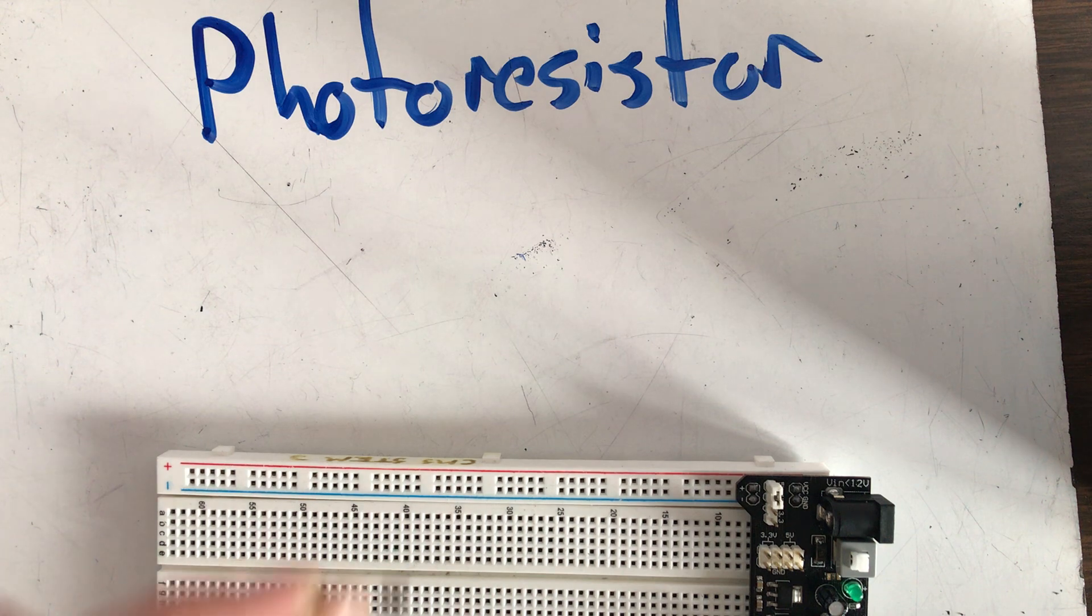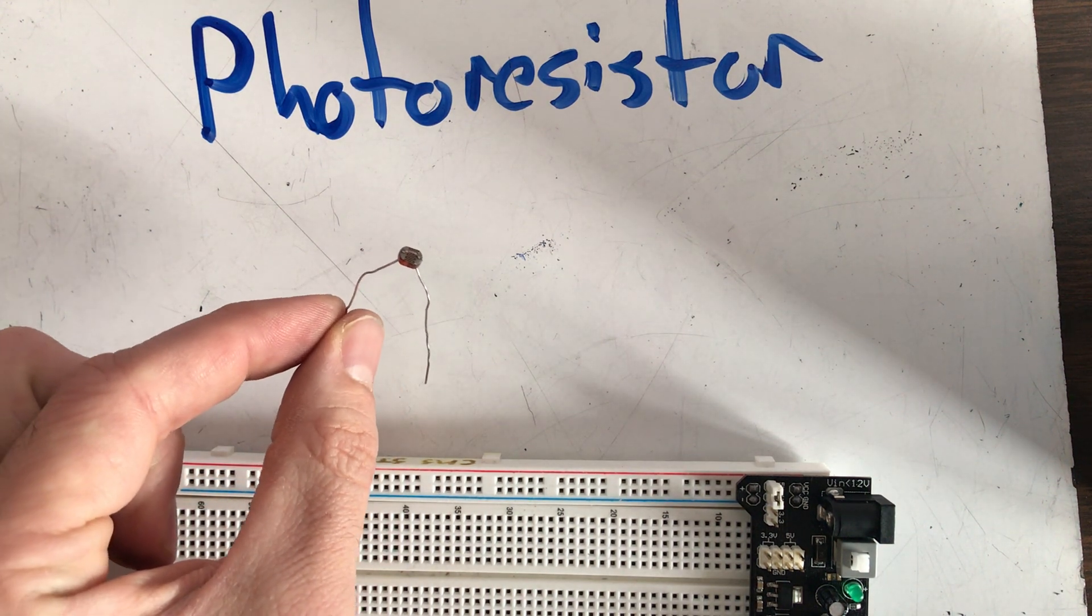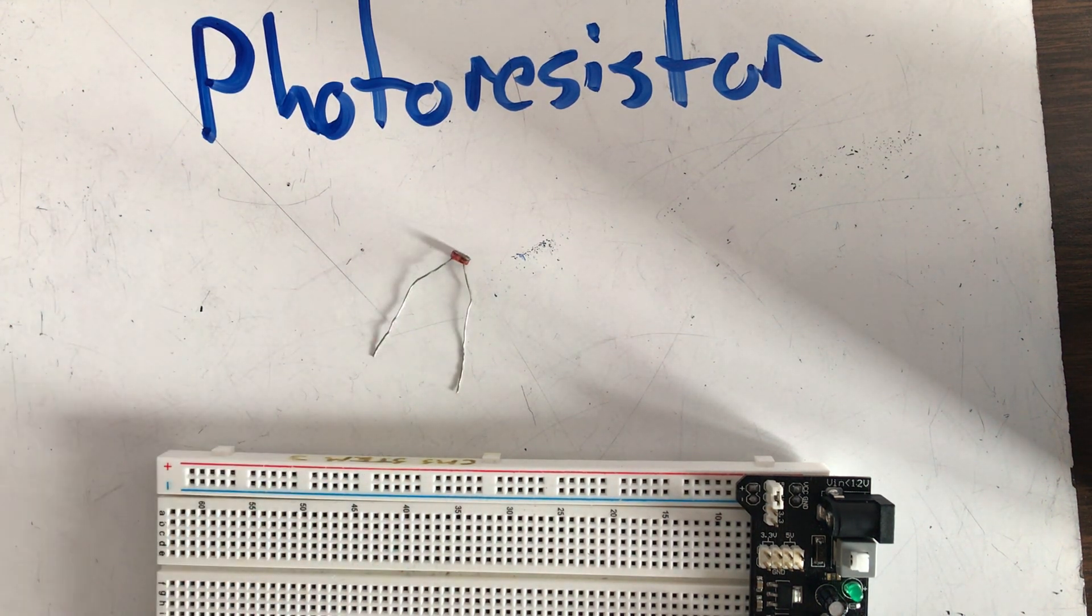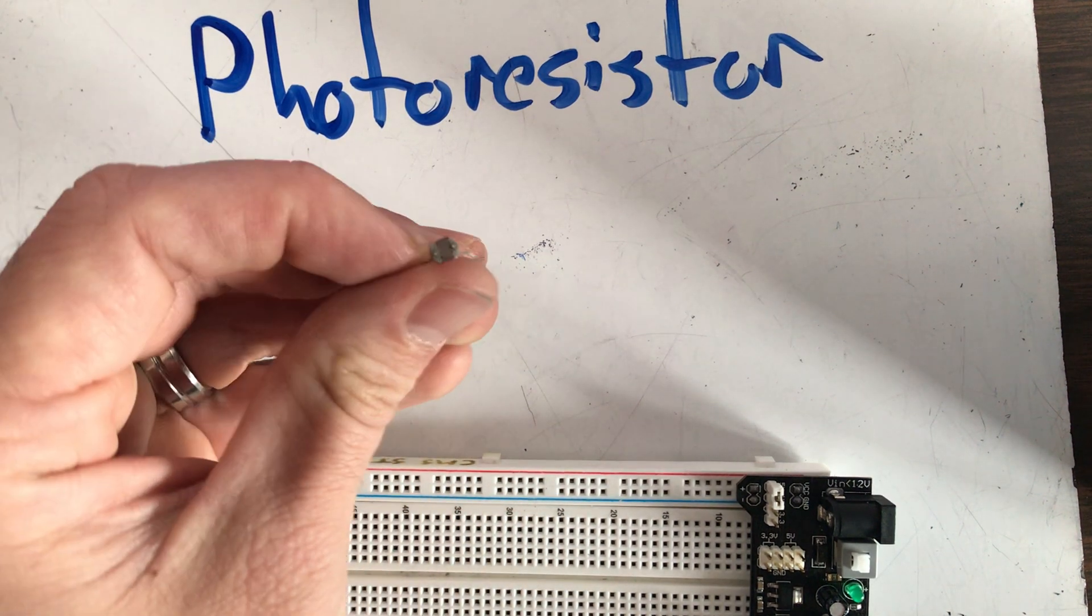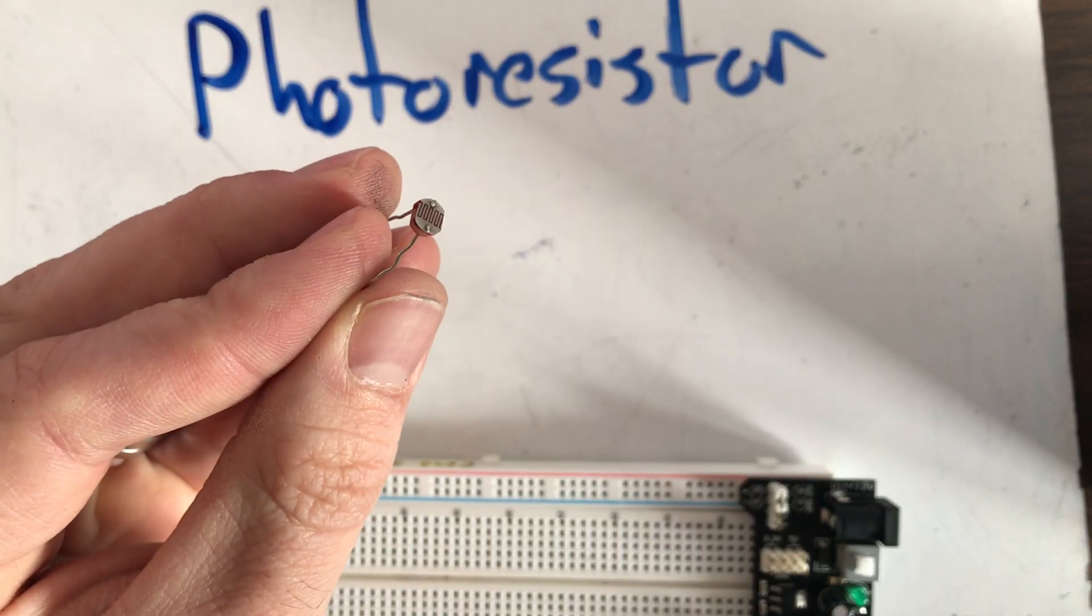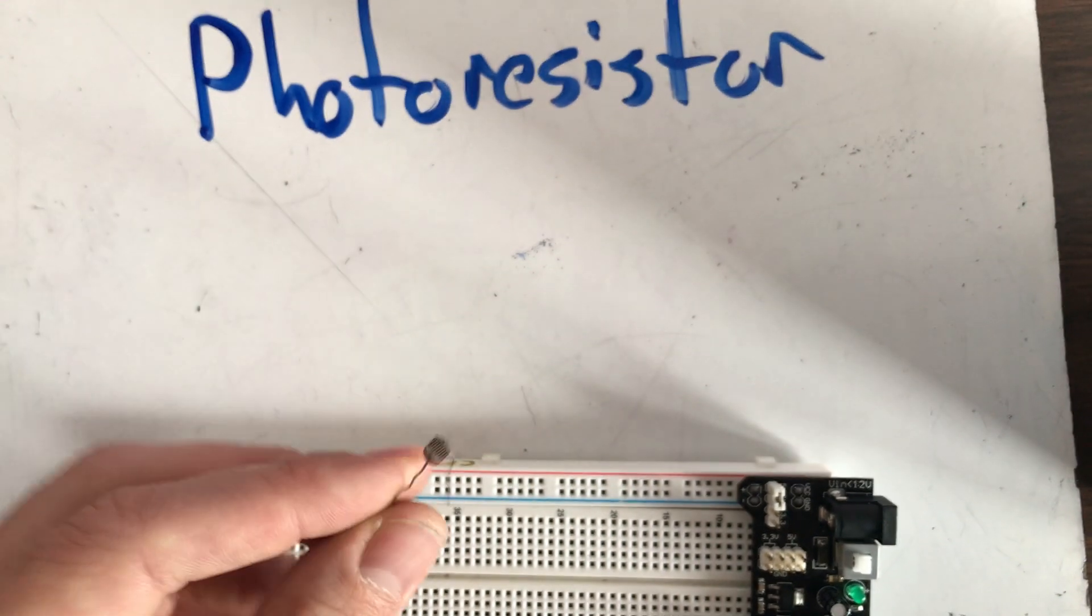Let's go ahead and meet our photoresistor. This right here is a photoresistor. You can see that it has two legs and then the top is this kind of weird squiggly looking thing on the top.